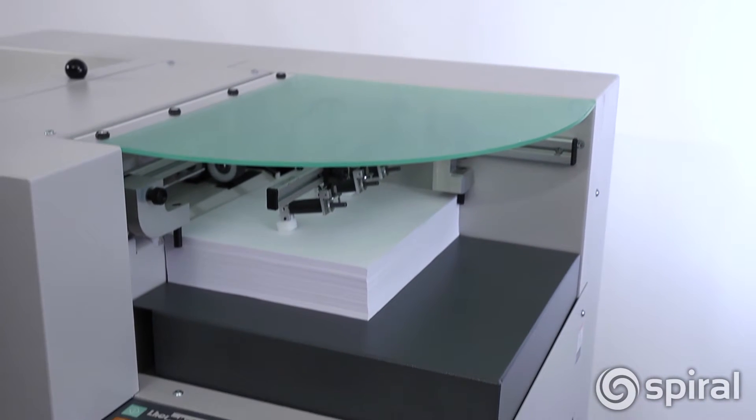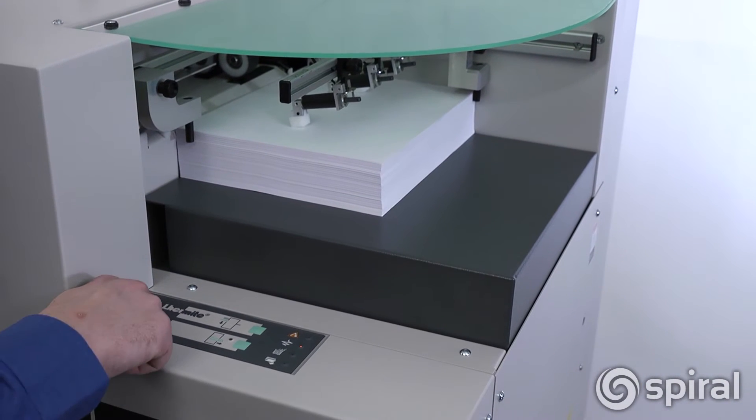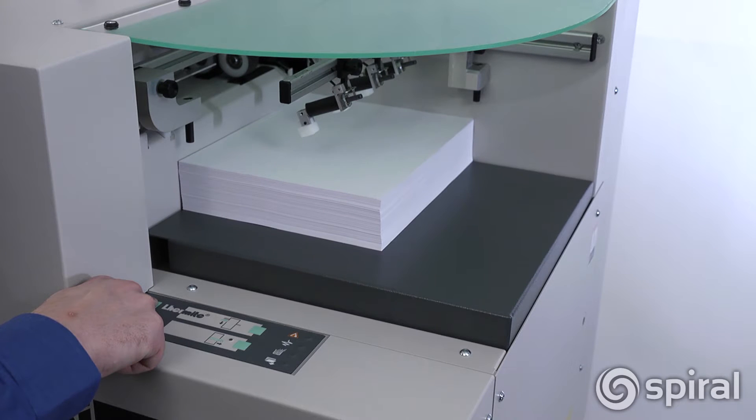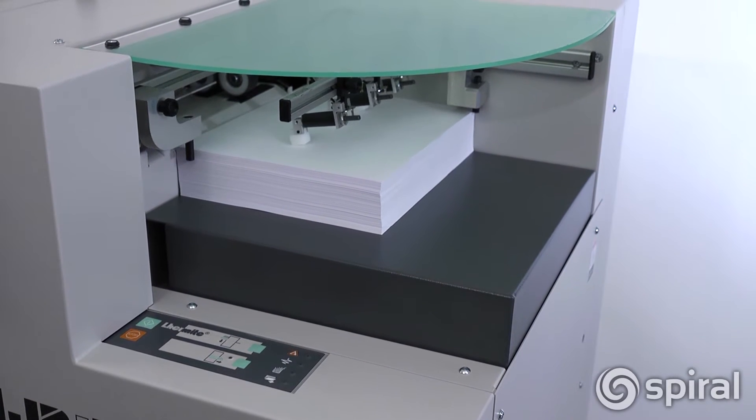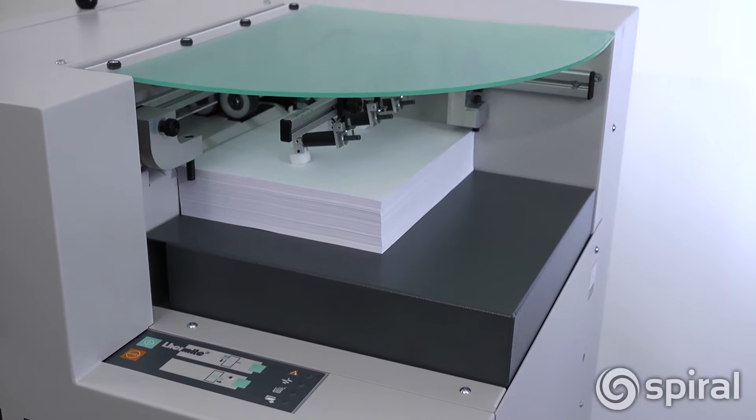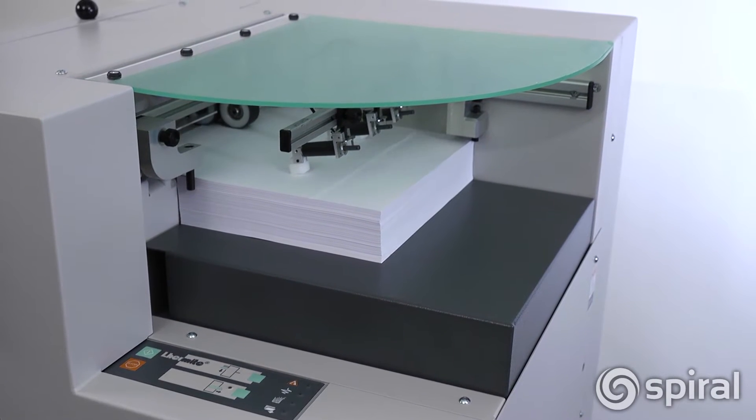Open the plexiglass cover and position the back and side guides against the stack of paper. Close the cover and push the green run icon on the control panel and hold until the feed table begins to rise, then release.